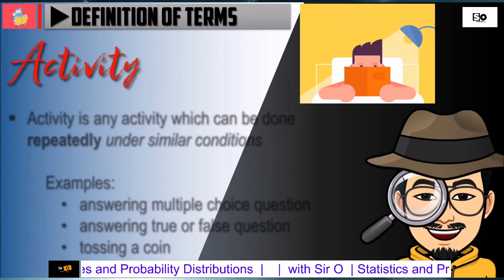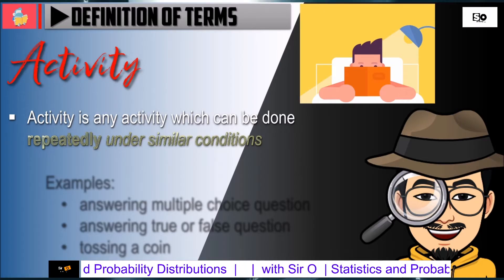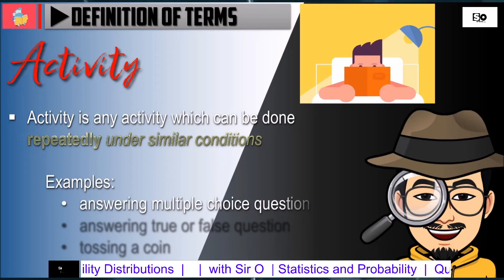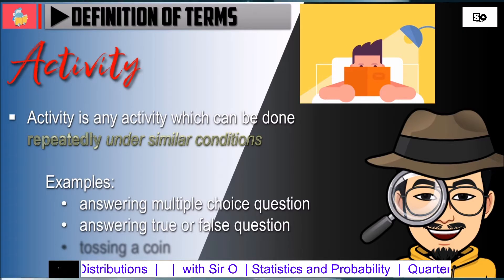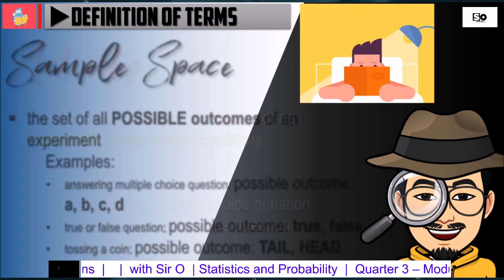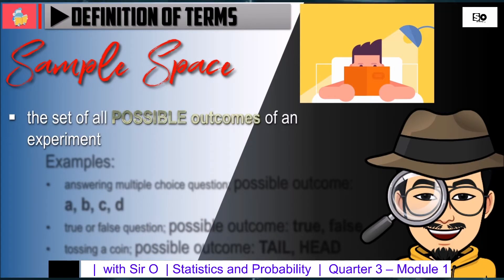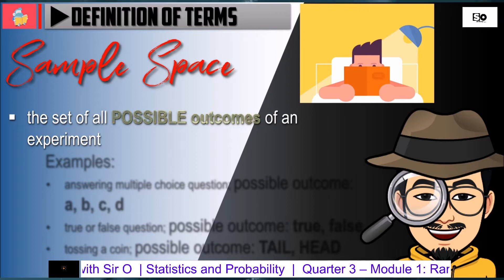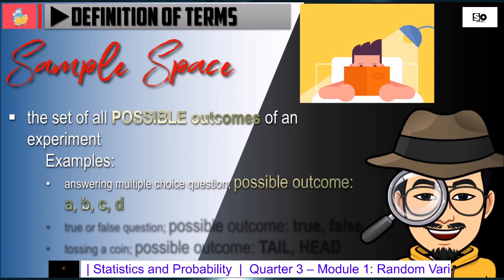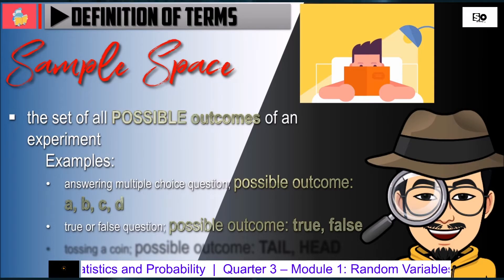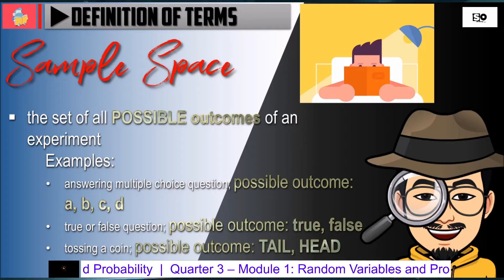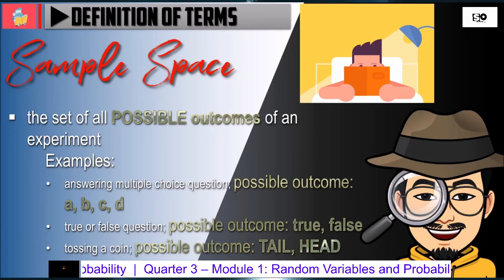An activity is any activity which can be done repeatedly under similar conditions. Examples include: answering a multiple choice question, answering a true or false question, and tossing a coin. Sample space is the set of all possible outcomes of one experiment. In answering multiple choice, the possible outcomes are A, B, C, or D. In true or false questions, possible outcomes are true or false. In tossing a coin, the possible outcomes are tail or head.